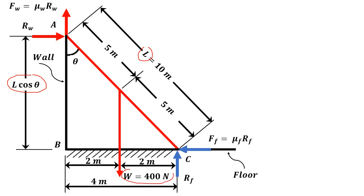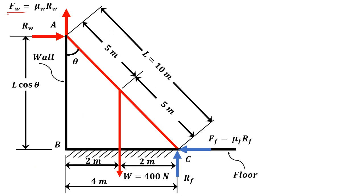The free body diagram shows W, the active force of 400 Newton, acting downward. The normal reaction offered by the floor is R_F, perpendicular to the floor. The reaction offered by the wall is R_W, perpendicular to the wall. F_F is the force of friction between the ladder and the floor, and F_W is the force of friction between the ladder and the wall. The adjacent component is L cos theta and the opposite component is L sin theta, which equals 4 meter.